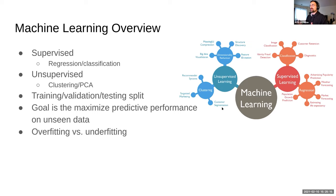Unsupervised machine learning is where you don't give the model any labeled training data. Instead, you feed a bunch of data into a model and it attempts to produce insights into the fundamental structure of the dataset. If you've ever done a principal component analysis, you know what I'm talking about — it's clustering inputs in a way that tries to demonstrate how similar they are to each other.